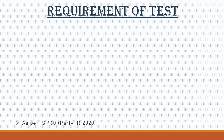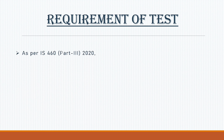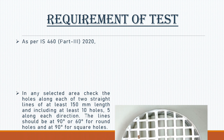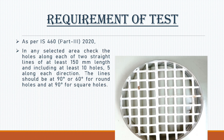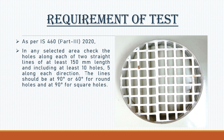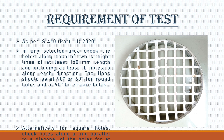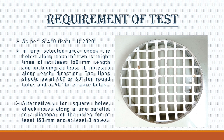As per IS-460, Part 3, 2020, in any selected area check the holes along each of two straight lines of at least 150 mm length, including at least 10 holes — 5 along each direction. The lines should be at 90 degrees or 60 degrees for round holes, and at 90 degrees for square holes. Alternatively, for square holes, check holes along a line parallel to a diagonal of the holes for at least 150 mm and at least 8 holes.